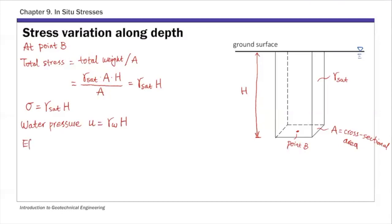Finally, the effective stress at point B at depth H: σ' = σ − u = γ_sat × H − γ_w × H. That is the effective stress value at depth H below the ground surface.